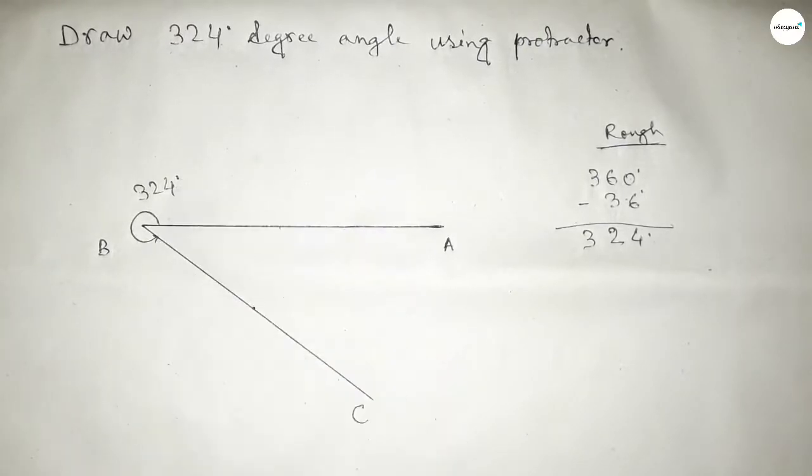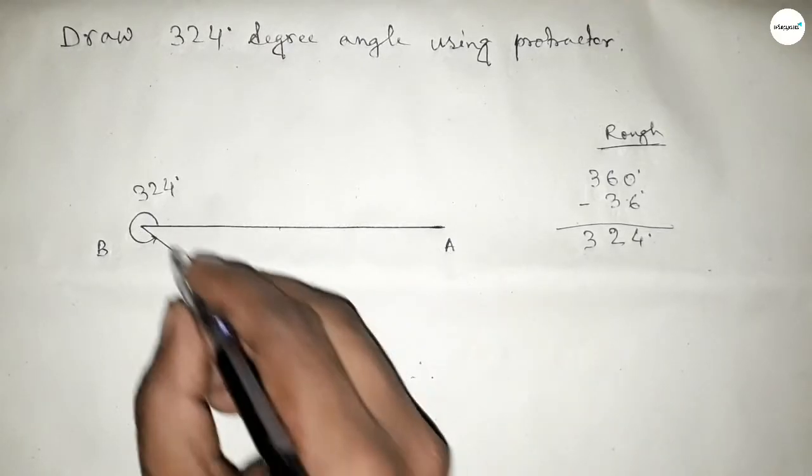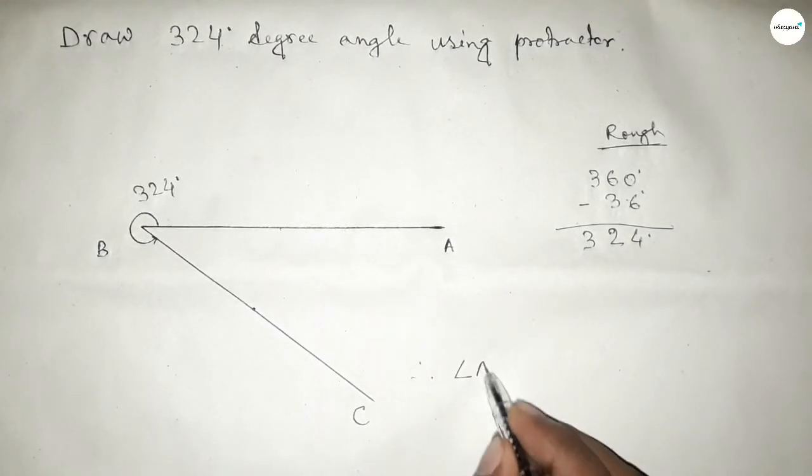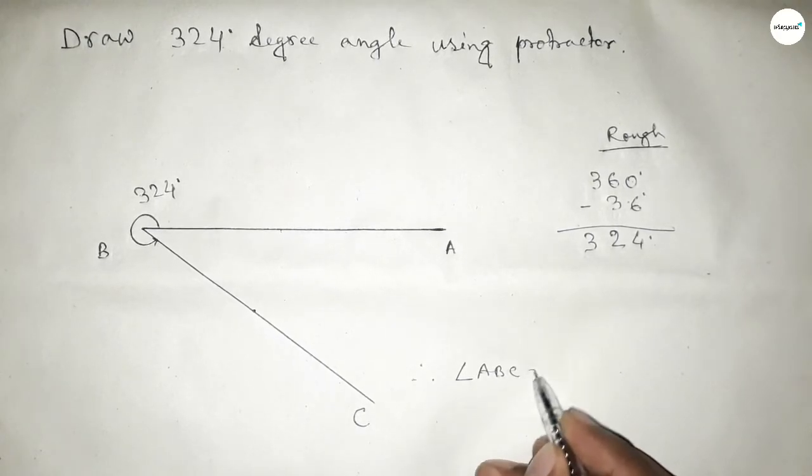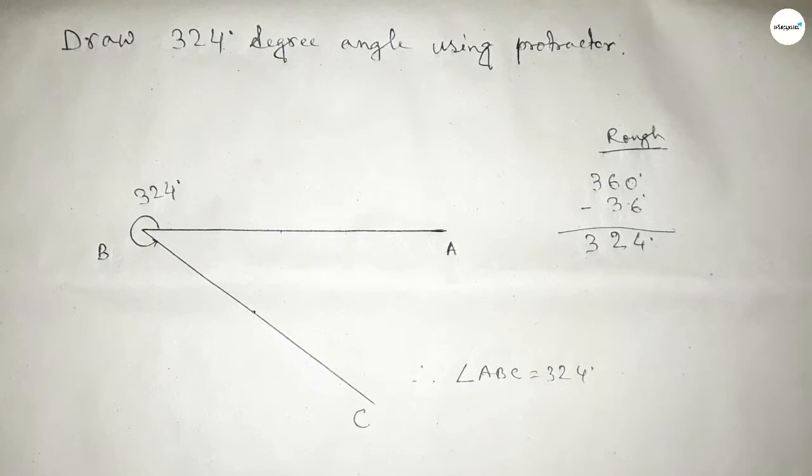Therefore, angle ABC equals 324 degrees. That's all. Thanks for watching. If this video is helpful to you, then please share it with your friends.